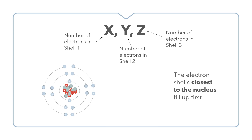The electron shells closest to the nucleus fill up first, so when we count electrons we start with the innermost shell and work our way outwards. For example, with this atom here, the first shell has two electrons, the second shell has eight electrons, and the third shell also has eight electrons. So the total electron configuration for this atom is 2,8,8.